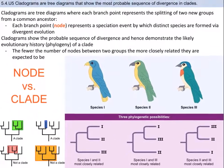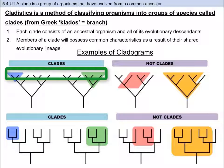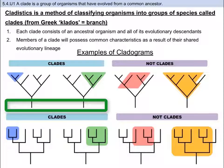Cladistics is another method of classifying organisms. Each clade consists of an ancestral organism and all of its evolutionary descendants, and members of a clade will possess common characteristics as a result of their shared evolutionary lineage. Cladograms can appear from top to bottom, as branches or diagonal forks, and even from right to left or left to right — either way is correct. They also represent a timeline: the end of the branch is current time, and the furthest back is older.